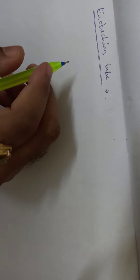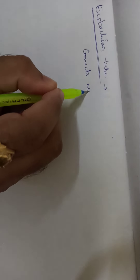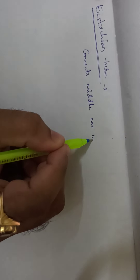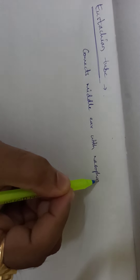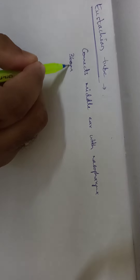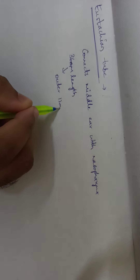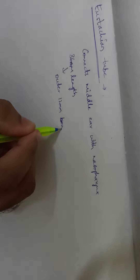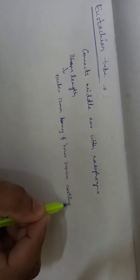Coming to the anatomy of the Eustachian tube, it is a tube-like structure that connects the middle ear with the nasopharynx. It has a length of 36 mm, out of which the outer 12 mm is bony and the inner 24 mm is cartilaginous.